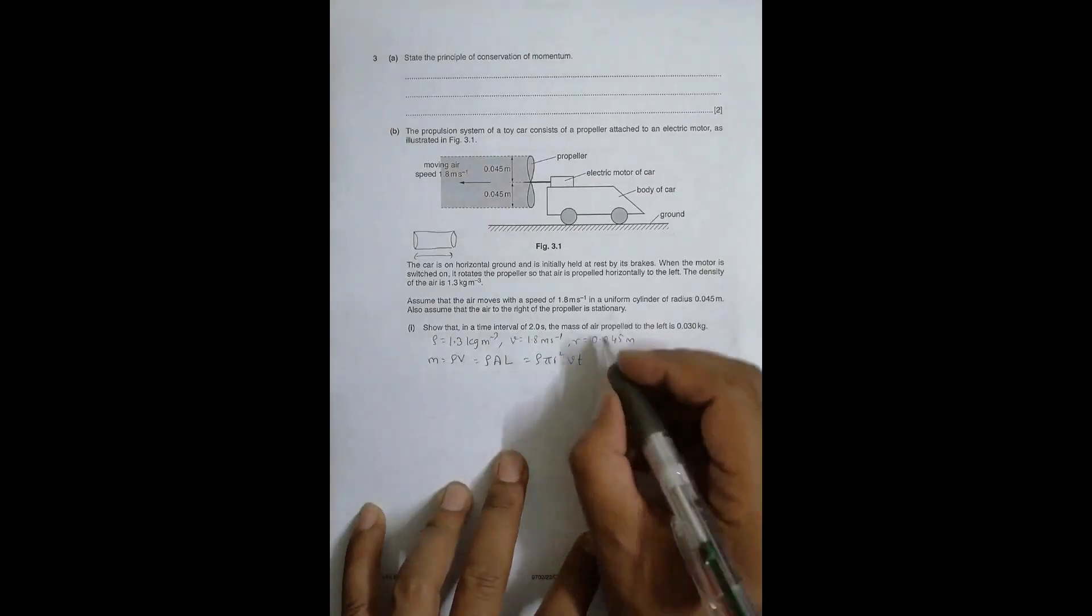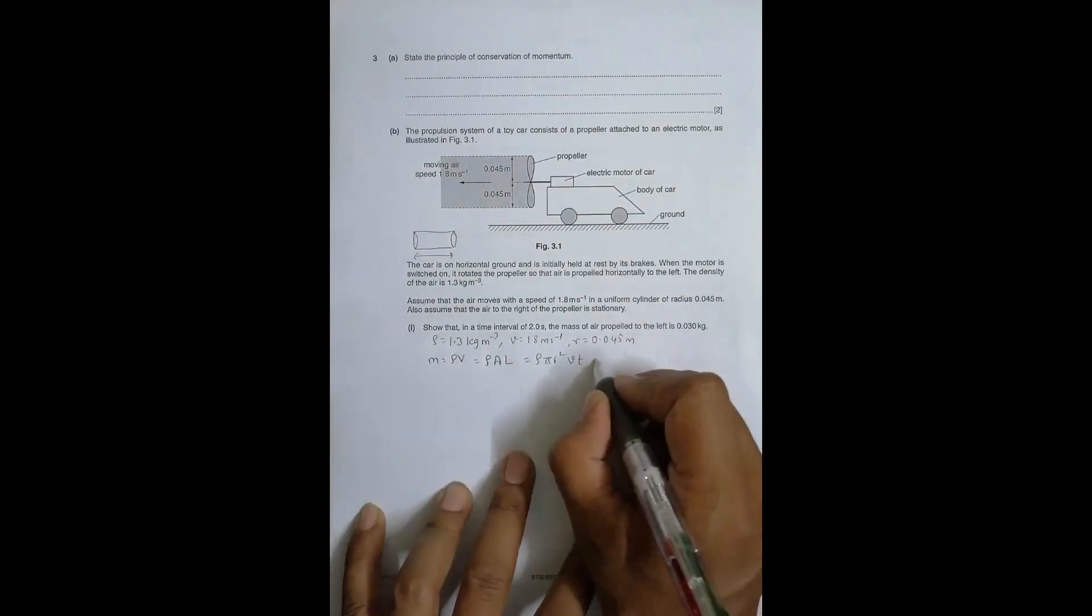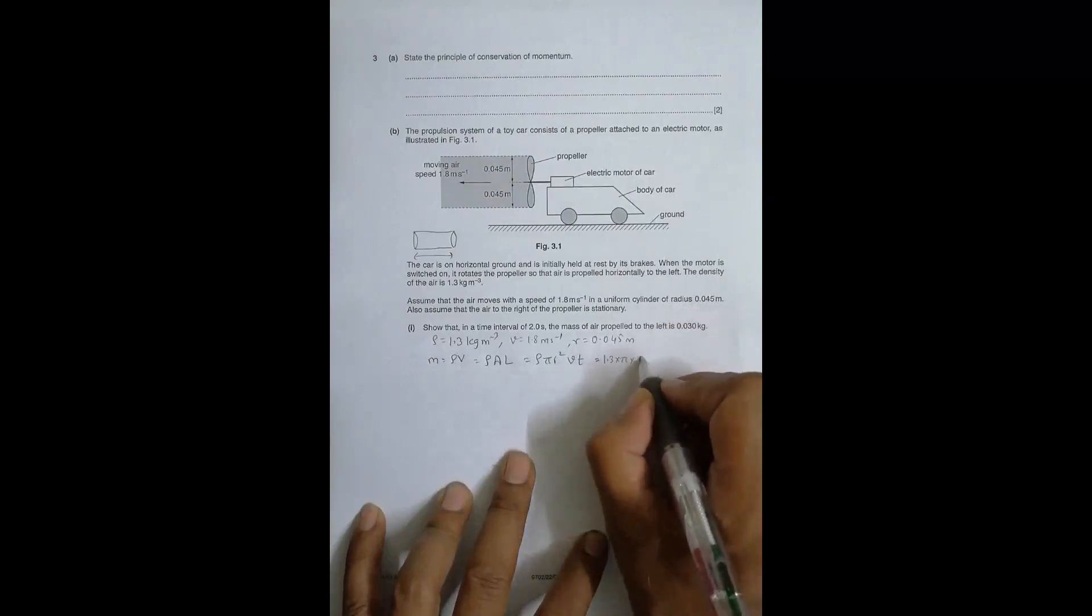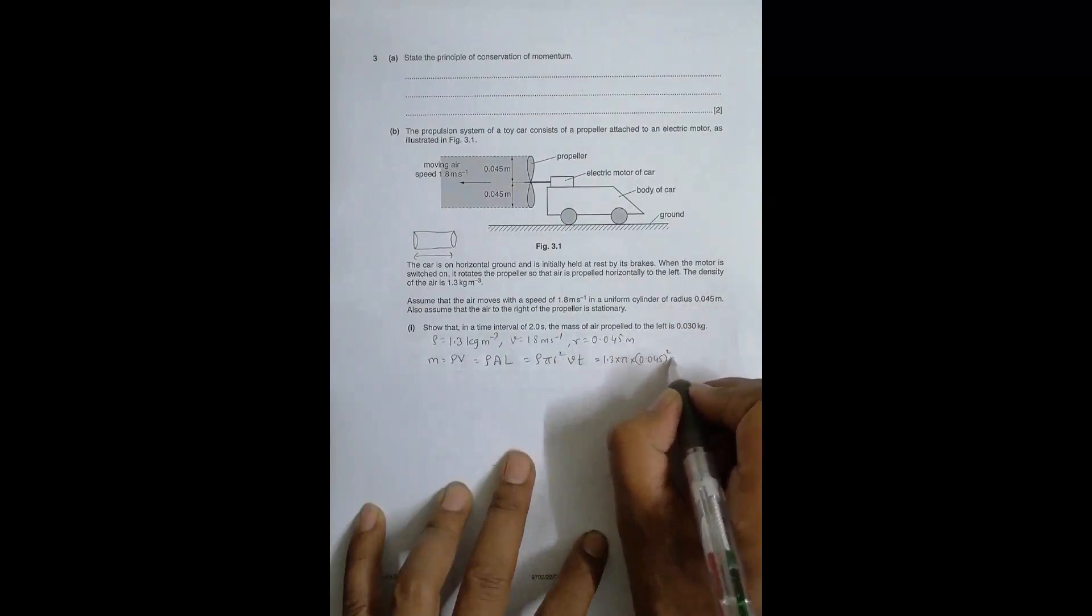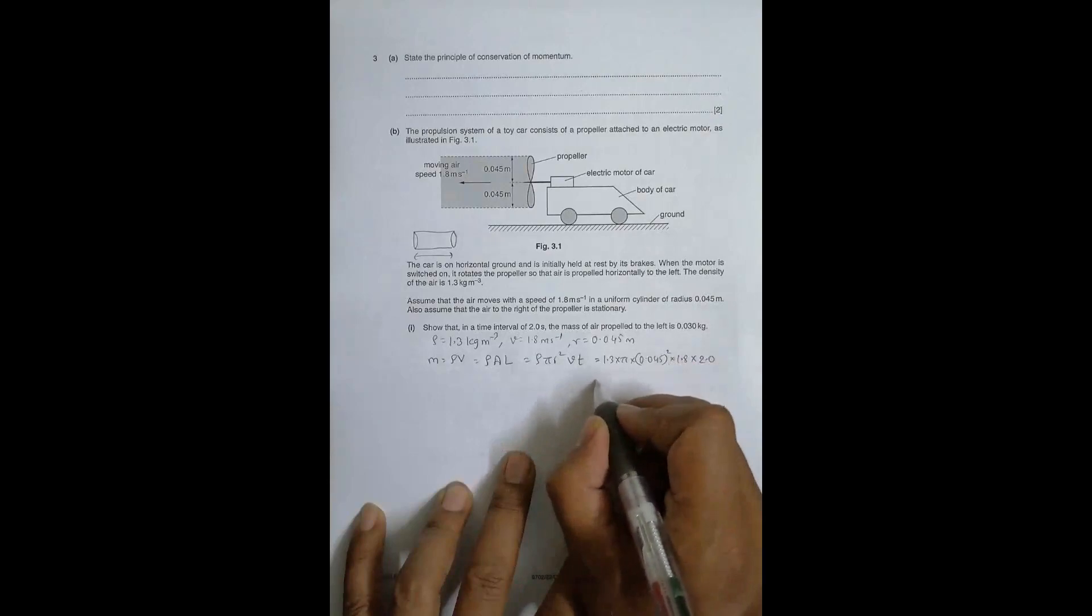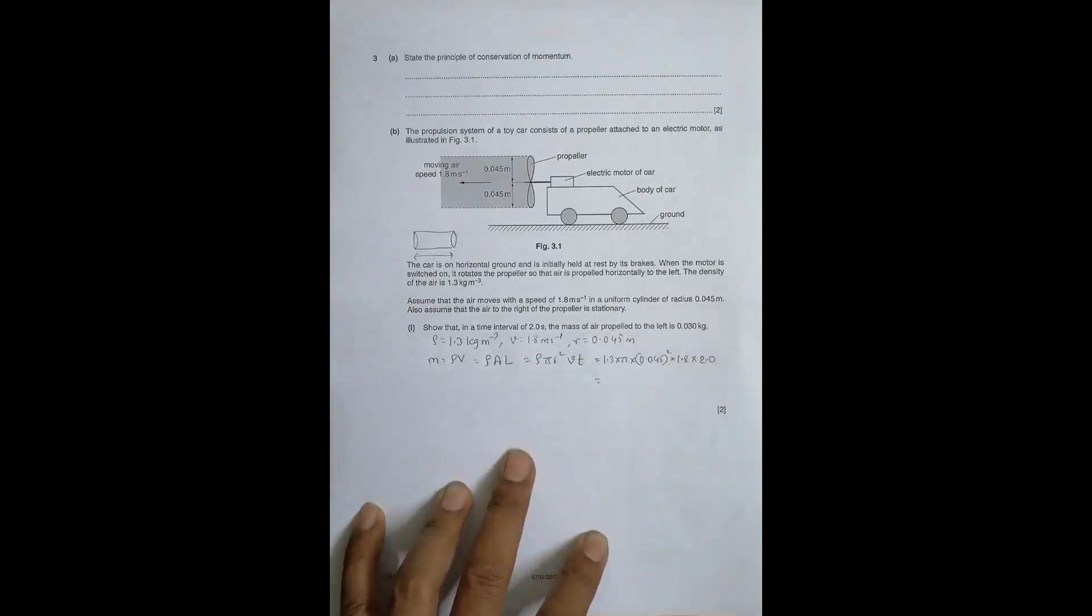Now if I apply the values here, I'll have ρ is 1.3 into π into r is 0.045 squared into v equal to 1.8 into time equal to 2.0.